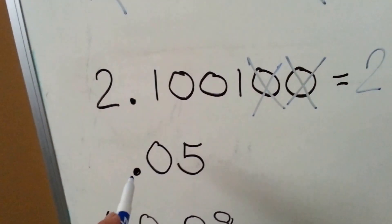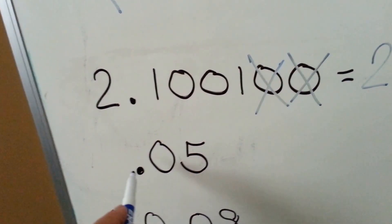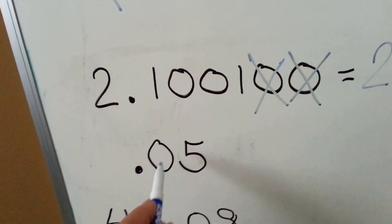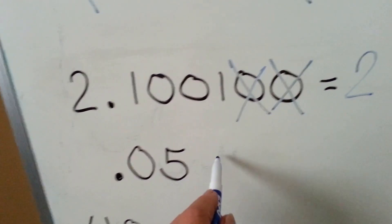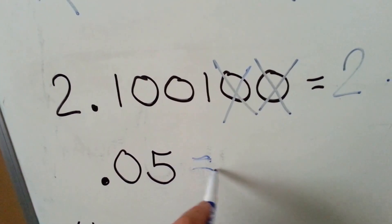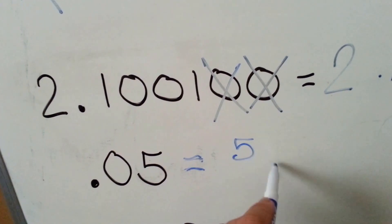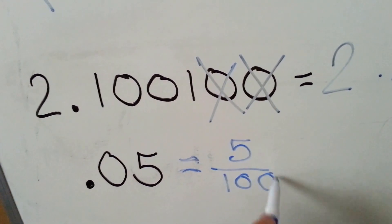This number has no unnecessary zeros. That zero is necessary for this five to be in the hundredths place. It would be written like that as a fraction.